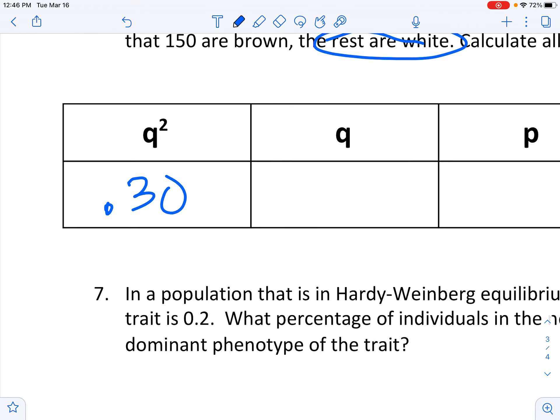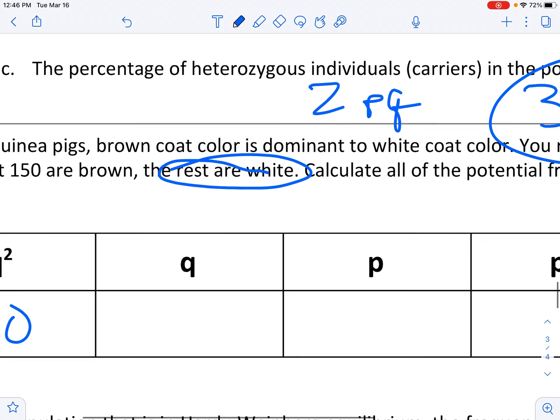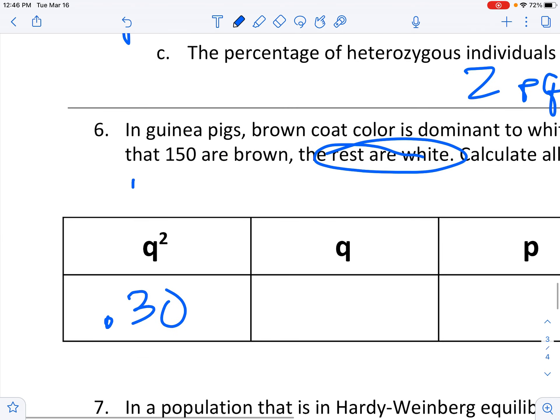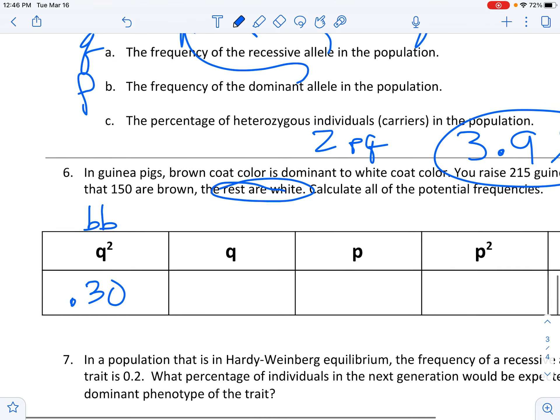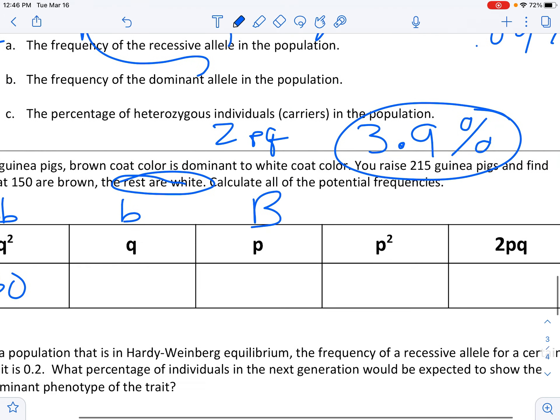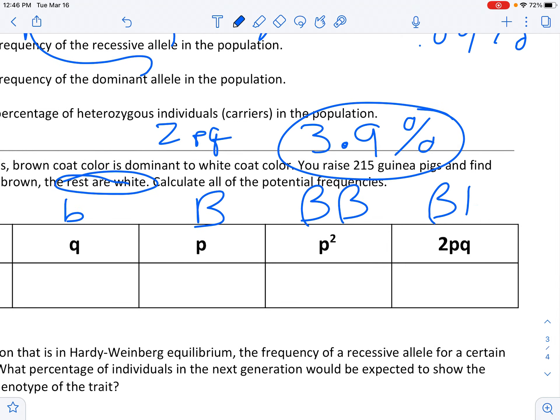0.30 have the, we're going to use brown is dominant to white. So we'll do the genotype little b, little b for recessive, capital B for dominant, and so on.